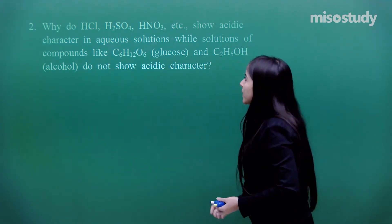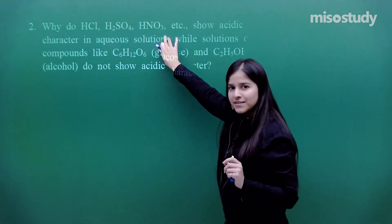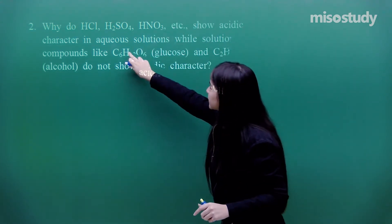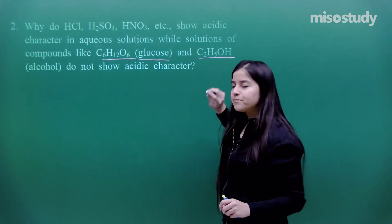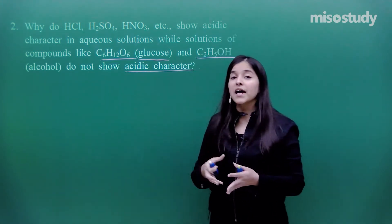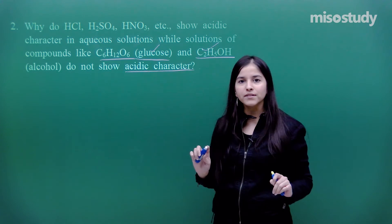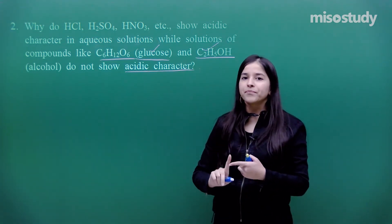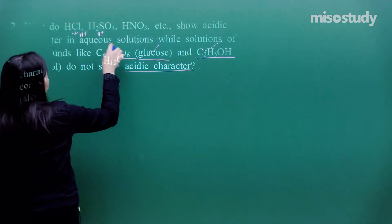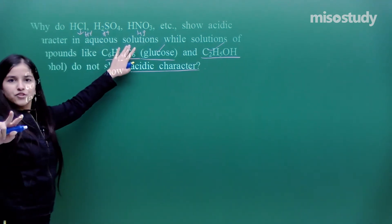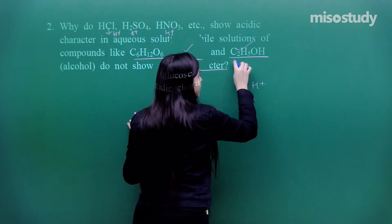Question number 2: Why do HCl, H₂SO₄ and HNO₃ show acidic character in aqueous solutions, while solutions of compounds like C₆H₁₂O₆ (glucose) and C₂H₅OH (alcohol) do not show any acidic character? The property responsible in an acid is the H⁺ ions. Whenever we dissolve HCl, H₂SO₄ or HNO₃ in water, they give H⁺ ions — these are responsible for the colour change with indicators. Whereas glucose and alcohol do not give H⁺ ions in the medium, and that is why they are not acidic in nature.